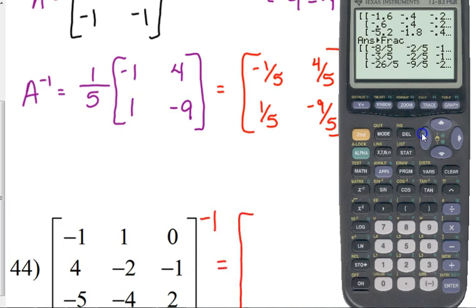So, it is negative 8 over 5. Negative 3 over 5. Negative 6 over 5. 10 over 5.